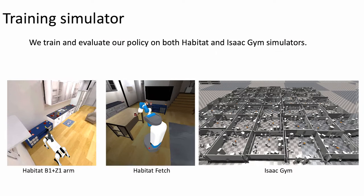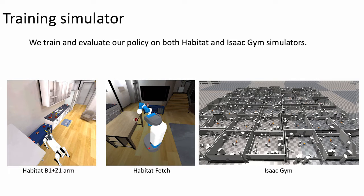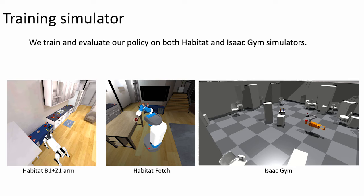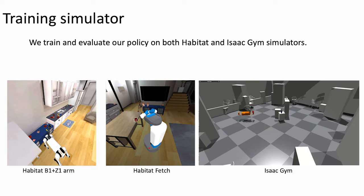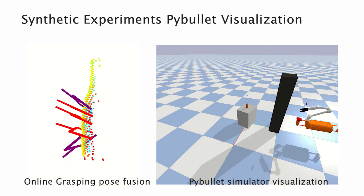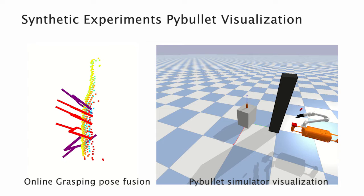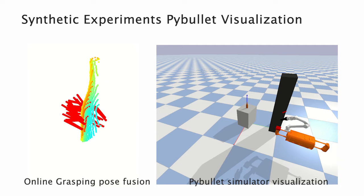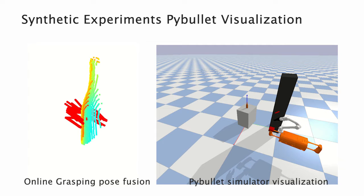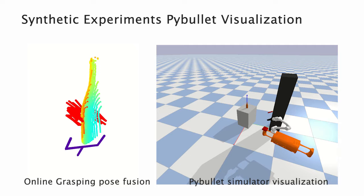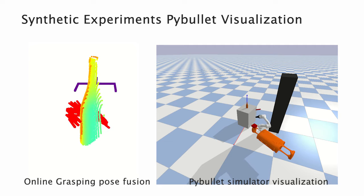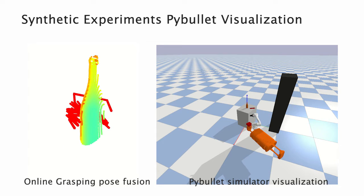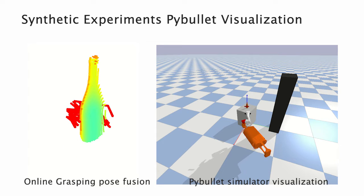We train our method on two mainstream simulators, Habitat and Isaac Gym. We present a visualization of our online grasping fusion module in the PyBullet simulator. As the system approaches target objects, the grasping poses are dynamically fused to achieve a more complete and accurate graspability state.